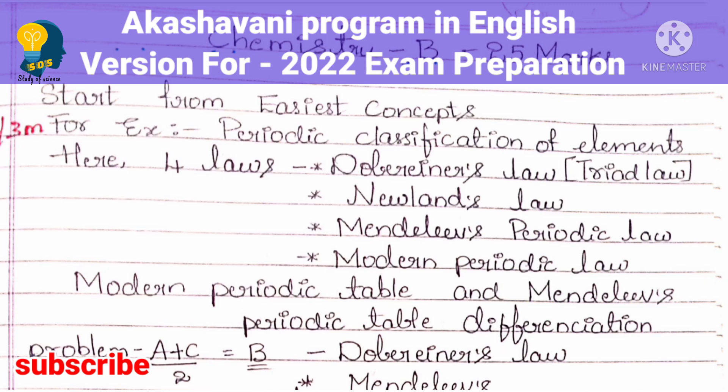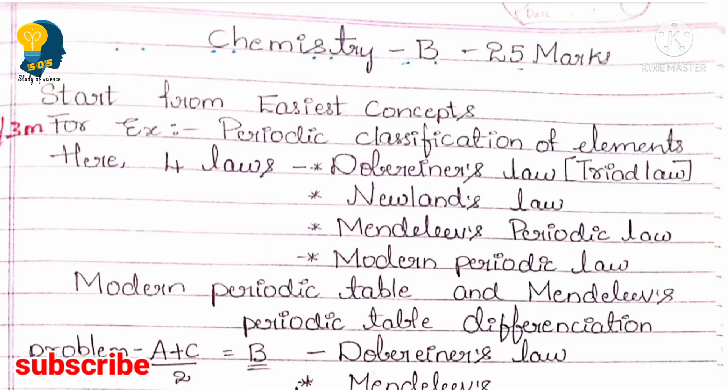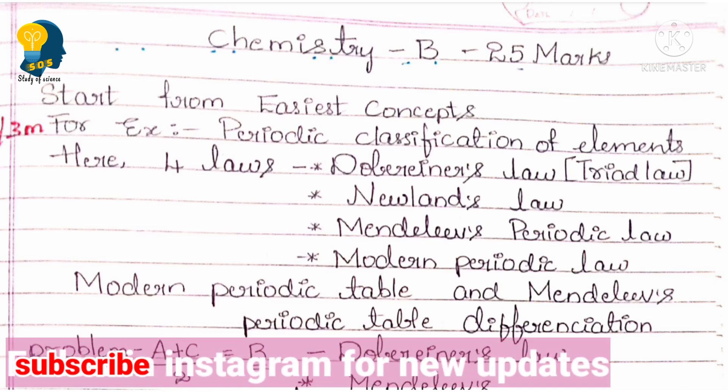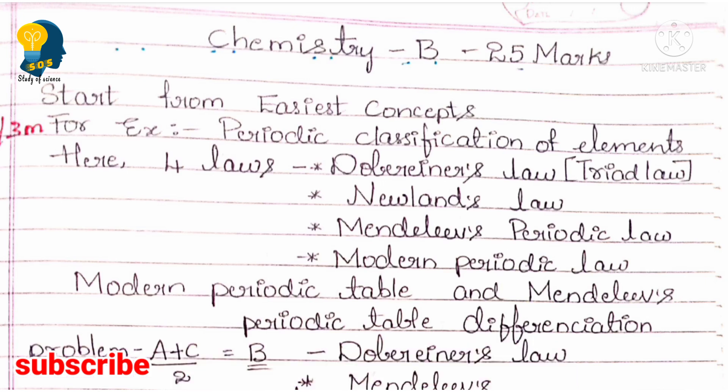For the Periodic Classification of Elements lesson, you will get either a two-mark or a three-mark question. The four laws you must study are: Dobereiner's Triad Law, Newland's Law of Octaves, Mendeleev's Periodic Law, and the Modern Periodic Law. Any one of these four laws can be asked in the examination, so you must study all four without fail.